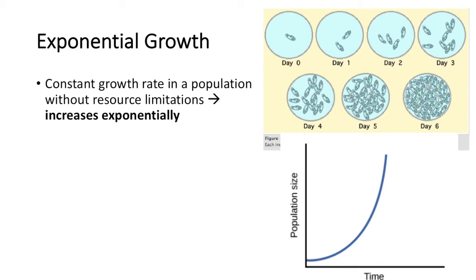You can almost think of this as doubling. Bacteria also display exponential growth, where their population will continue to double: 2 to 4 to 8 to 16 to 32 to 64. As you can see, it is not growing at a constant linear rate — it just continues to grow exponentially.